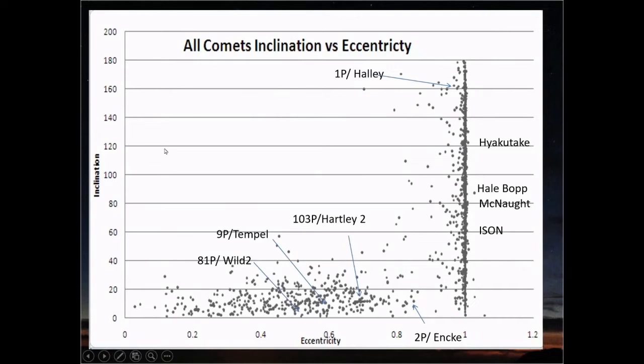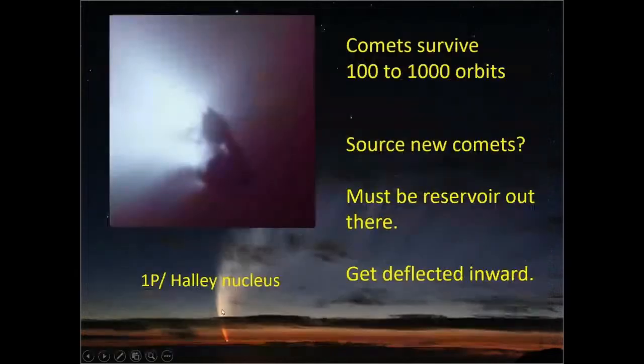Now here's a graph of comet data that I acquired. This is eccentricity across the bottom, which is the measure of whether the orbit is round or whether it's long and thin or whether it's a parabola, and this is inclination, which is a tilt from the solar system. Notice that Halley, even though it's a 76-year orbit, is very far from all the other ones that I've mentioned.